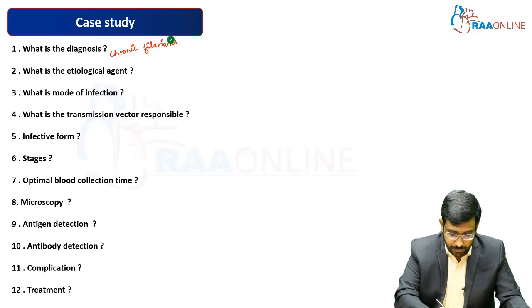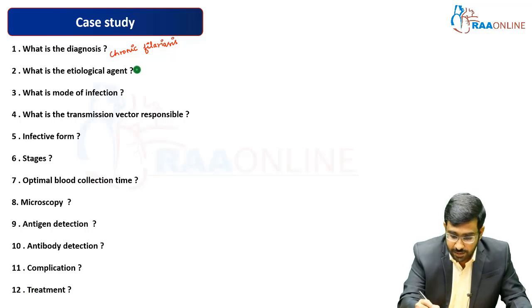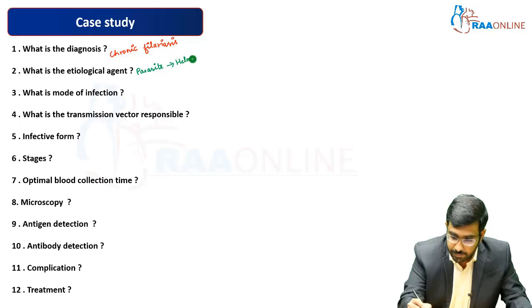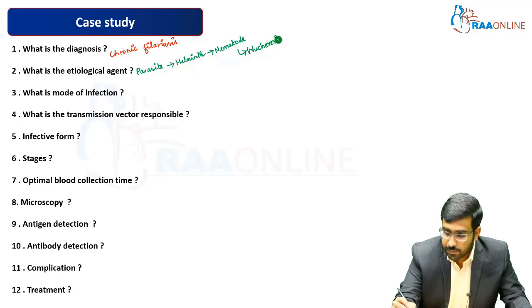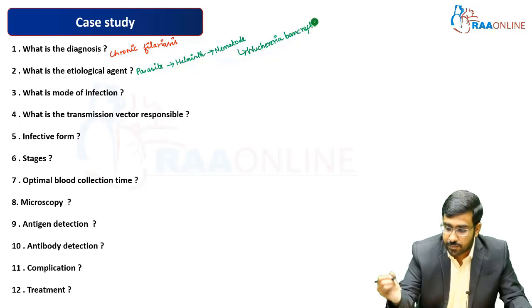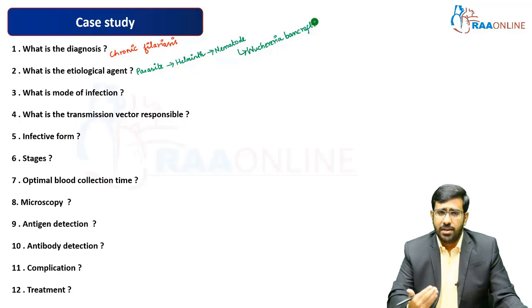What is the etiological agent? The etiological agent is a parasite — specifically a helminth, and more precisely a nematode. The organism is called Wuchereria bancrofti, which is a filarial worm.